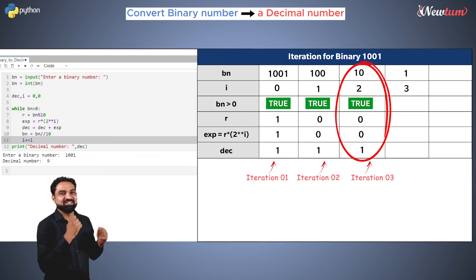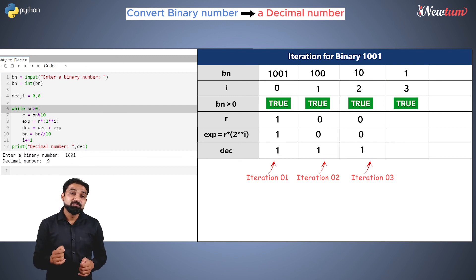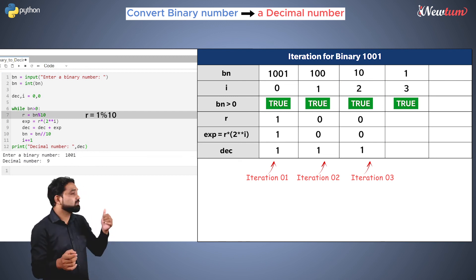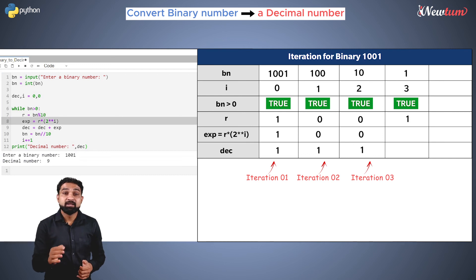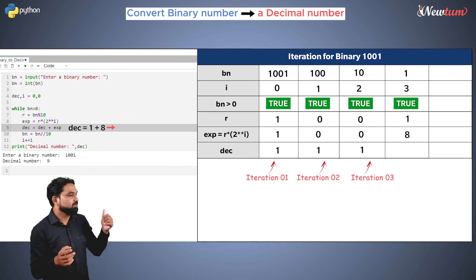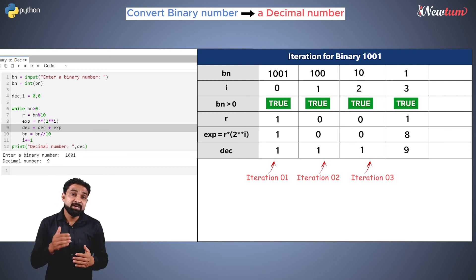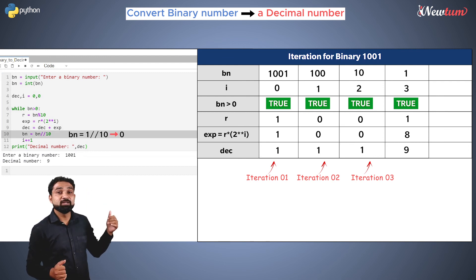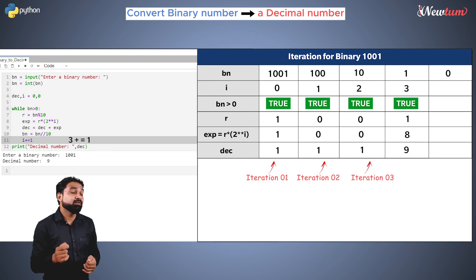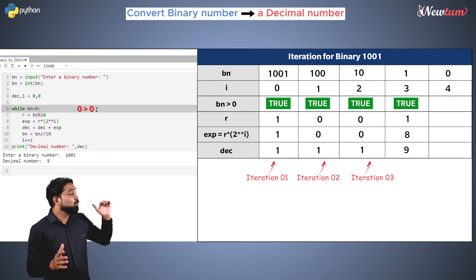It is time for the final iteration. Now we will get the value of r as 1, and the output of this expression will be 8, because 2 raised to 3 is 8. And our dec value will become 9. In the next line, bn will become 0 and i will be incremented to 4. But now our loop will break, since the condition is bn should be greater than 0.